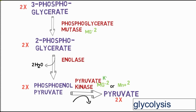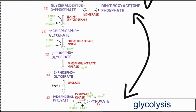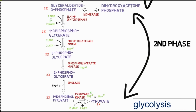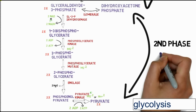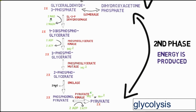In this reaction, 2 ADP molecules are converted into 2 ATP molecules. This is the second phase of glycolysis, and in this phase the energy is being produced.